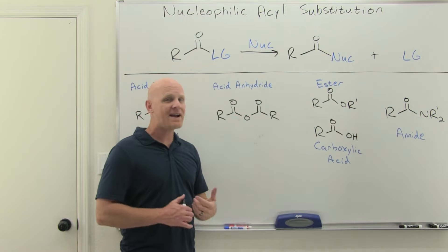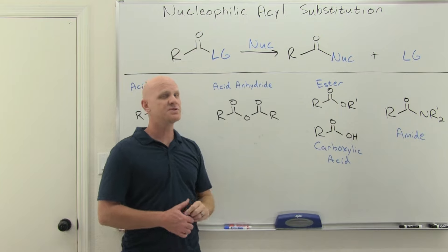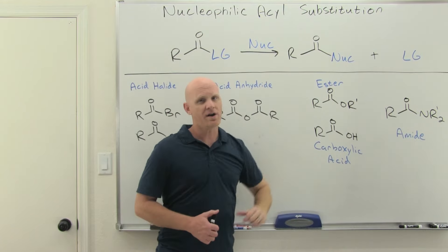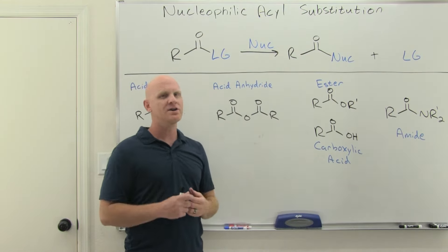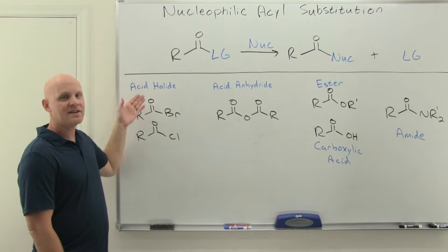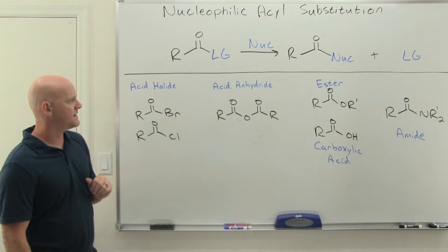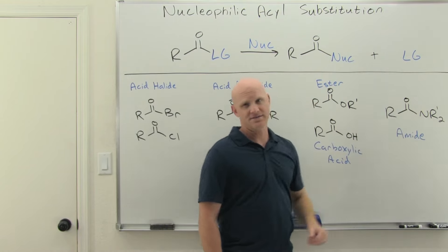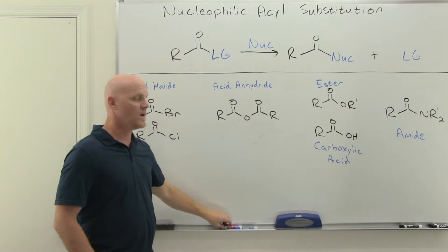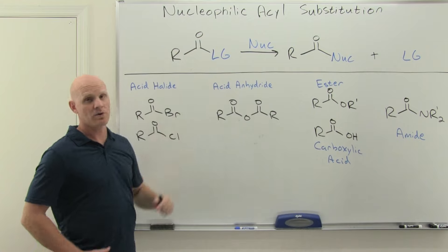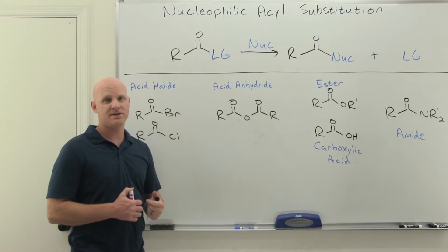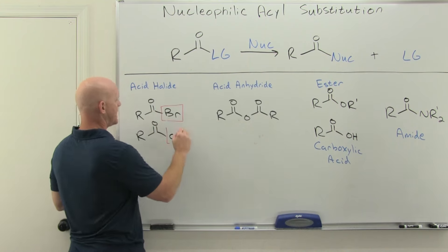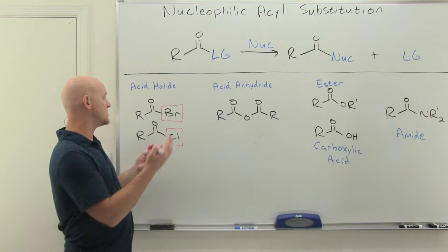There are big trends in reactivity we need to understand. Not every nucleophilic acyl substitution reaction is spontaneous — you have to go from a less stable reactant to a more stable product. Acid halides are the most reactive of the carboxylic acid derivatives, then anhydrides, then esters and carboxylic acids which are roughly equal in reactivity, and finally amides. We can explain this in a couple of different ways.